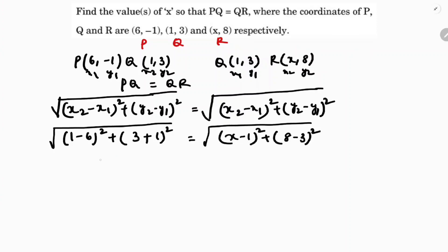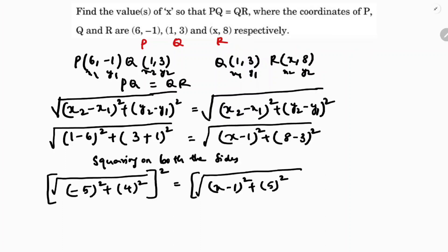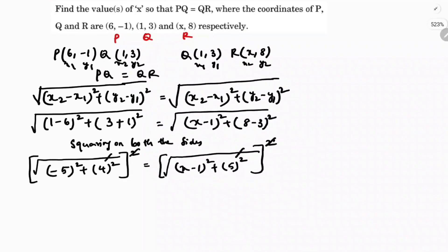Squaring both sides, the roots get cancelled. We get: (minus 5) whole square plus 4 squared equals (x minus 1) whole square plus (8 minus 3) squared. That gives us 25 plus 16 equals (x minus 1) whole square plus 25. The 25s cancel on both sides, leaving (x minus 1) whole square equals 16.